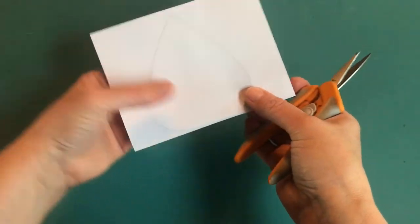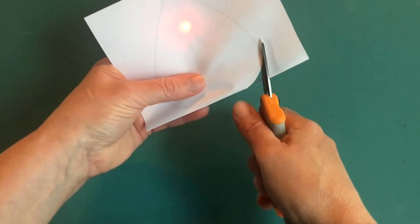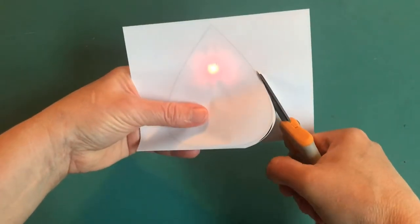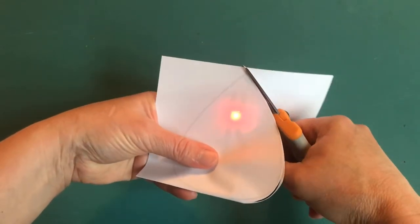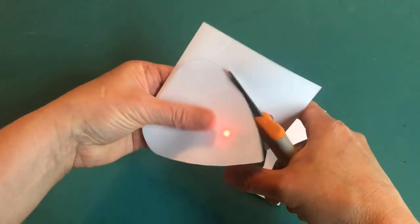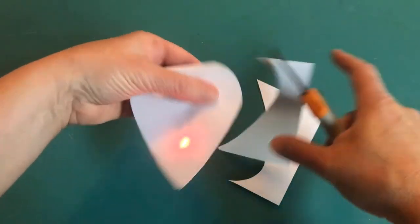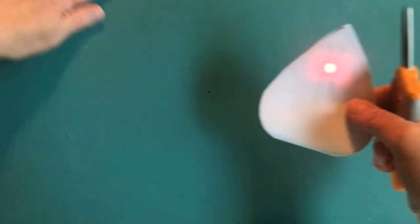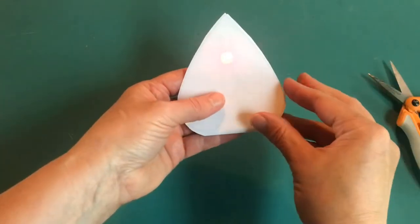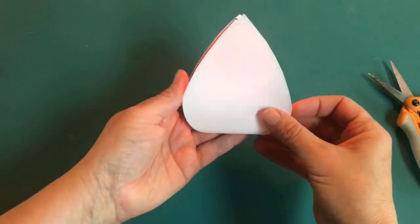And I can see the lines through the paper and I'm going to cut out my leaf shape. But I'm not going to cut the edge that's holding the two pieces of paper together. Okay, so now I have a leaf.